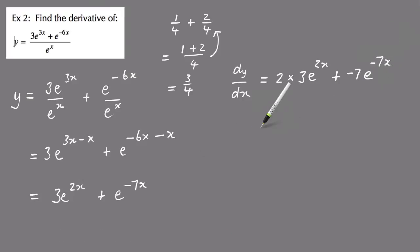And then just tidy that up, so 2 times 3 is 6, so 6e to the 2x minus, these two become a minus, minus 7e to the minus 7x. And that's the easy way of finding the derivative of this fraction rather than using the quotient rule. So that's it for this lesson, I'll see you in the next one.